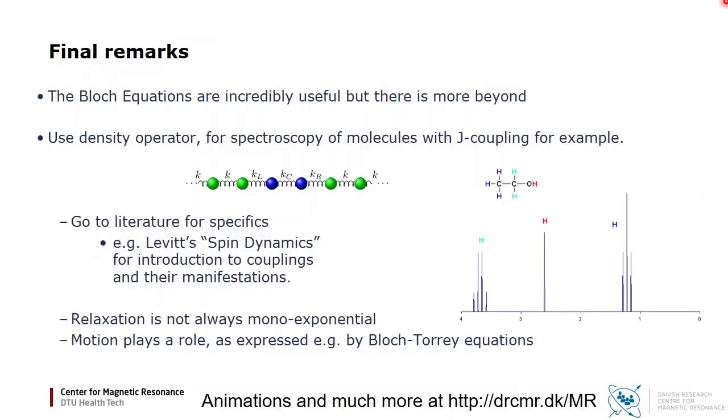Some final remarks: the Bloch equations are incredibly useful, but there is more beyond. For example, for spectroscopy of molecules with J-coupling, you will find the density operator useful. Such a molecule, as shown here for example, is essentially a collection of coupled oscillators, and as for similar classical systems, we end up with a series of resonances. For specifics, go to literature. For example, I can recommend Levitt's Spin Dynamics.